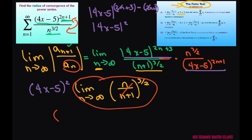So you're going to get 4x minus 5 squared. Now this converges if this is less than 1. This is condition 1 here for our ratio test. So basically what you're going to do is divide each piece.